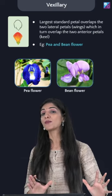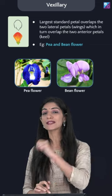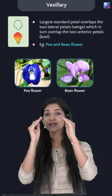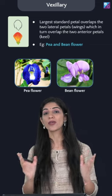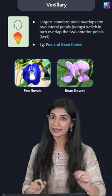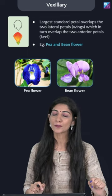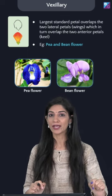The last and most popular one is vexillary estivation, where we have the standard, the wings, and the keel. The classic example is the pea family.